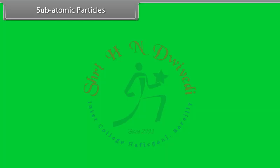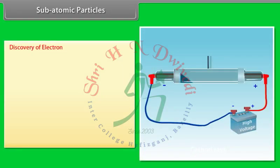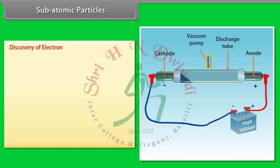Subatomic particles: Discovery of electron. A discharge tube is a long glass tube fitted with metal electrodes on either end, across which high voltage can be applied. The tube is also connected to a vacuum pump for controlling the pressure of gas inside the discharge tube. There is a coating of phosphorescent material behind the anode.